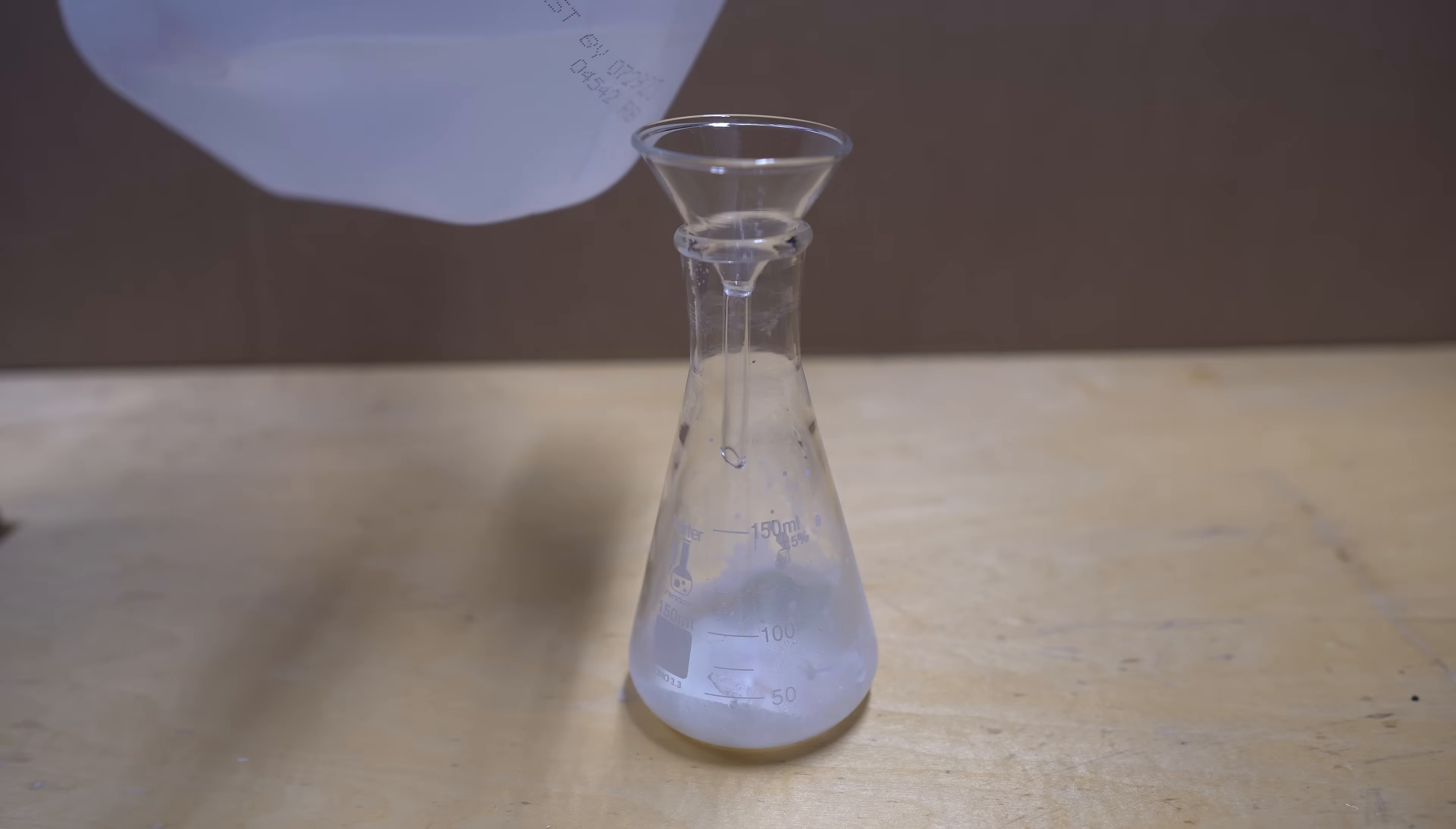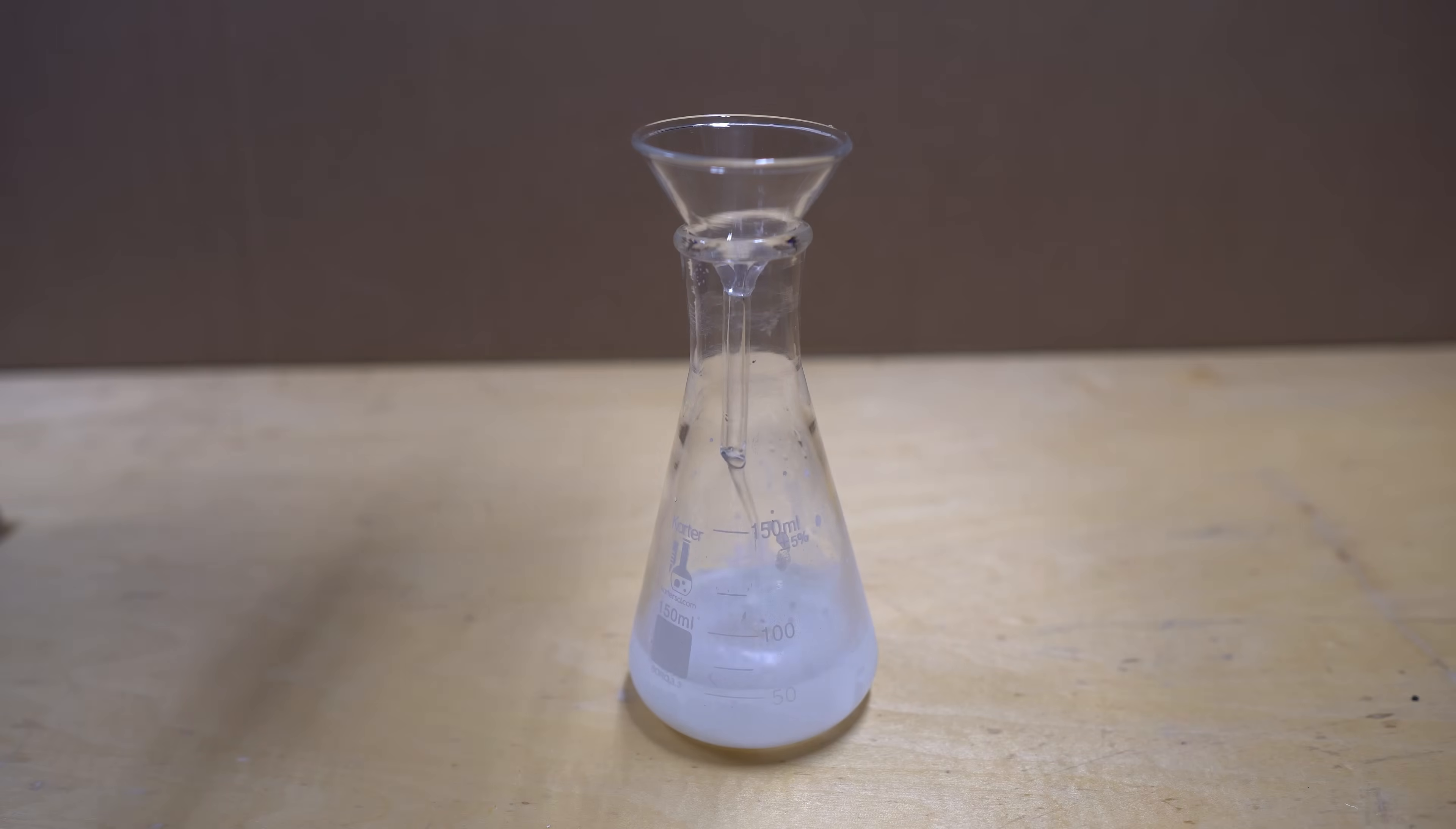Around 50 milliliters of distilled water was added to decompose the acetic anhydride and turn it into acetic acid. I then swirled the flask to mix everything.